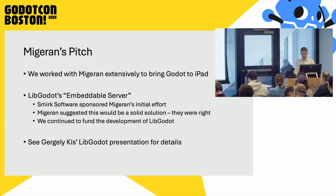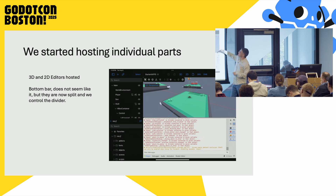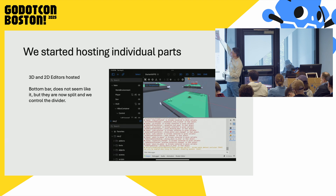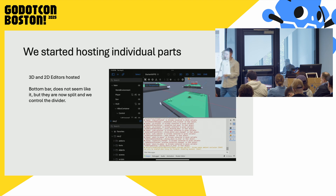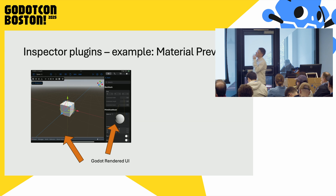Once that was done, we started to slowly move things out of Godot into SwiftUI — hijacking pieces bit by bit. The divider became SwiftUI while we hijacked separate windows from Godot. We took all the bottom panels first, then started extracting individual panels one by one — the inspector and other pieces — stealing them from Godot and shoving them into the SwiftUI UI.